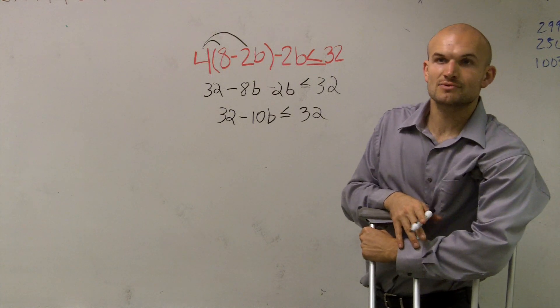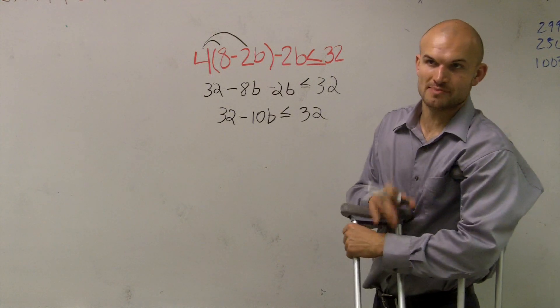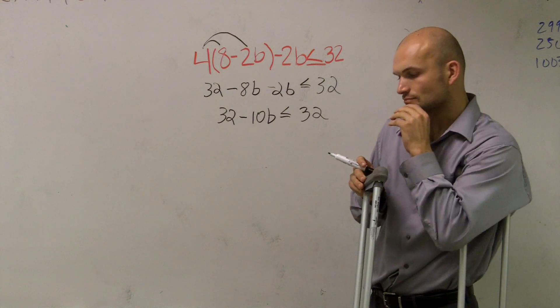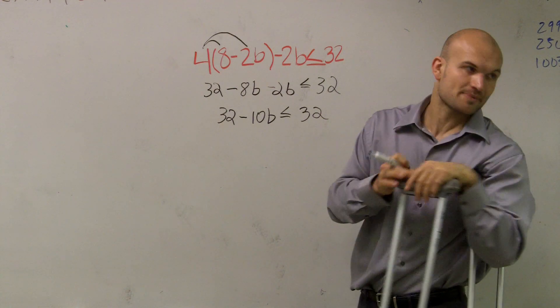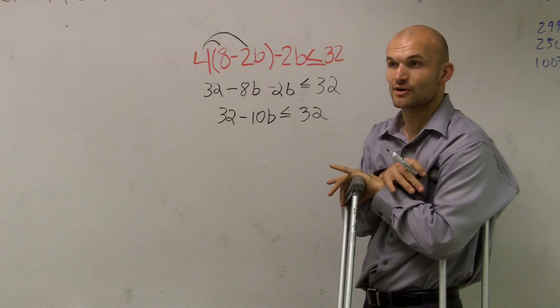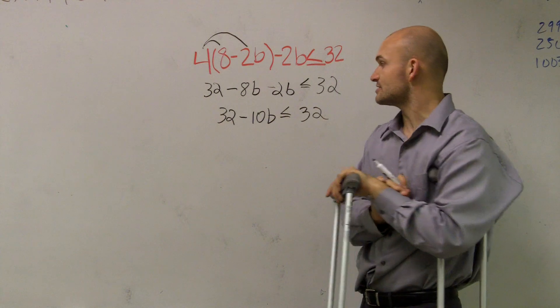All right. Now, here's one of my favorite mistakes that students make. So now we look at b and we say, well, we need to undo what's happening to our variable, right? Mr. McGlogan always says undo addition and subtraction first, and then undo multiplication and division.